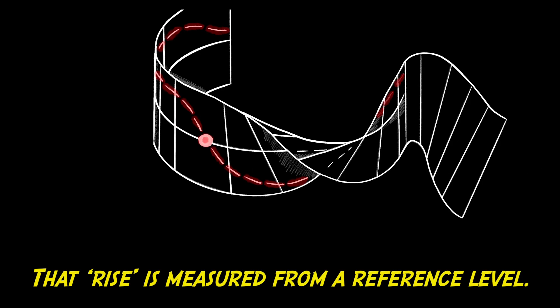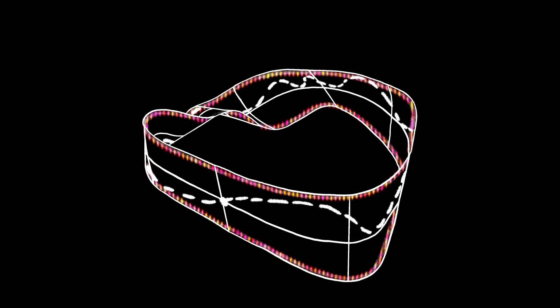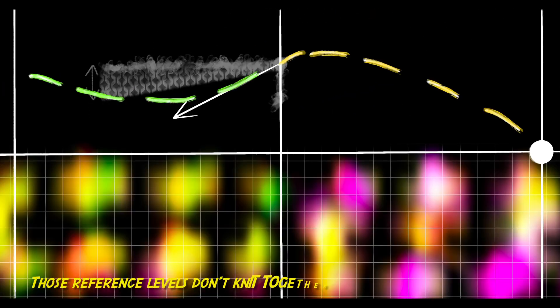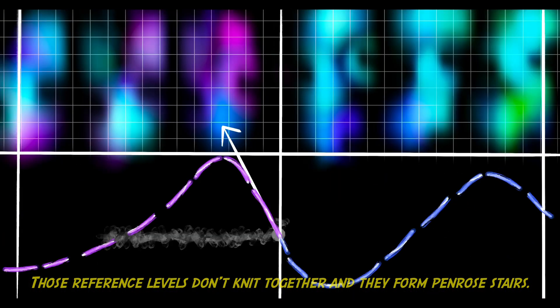That measures rise over run. That rise is measured from a reference level. Those reference levels don't knit together and they form Penrose stairs.